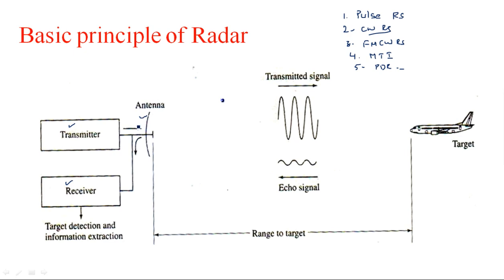Whatever the radar system, transmitter, receiver, and antenna are common. How we identify whether it is a pulse radar, continuous wave radar, or FM-CW radar depends on the type of transmitting and receiving section used. If a pulse wave transmitter is used, it is a pulse radar system. If a continuous wave without modulation is used, it is a CW radar system. If frequency modulation is applied with the continuous wave, it becomes an FM-CW radar system.